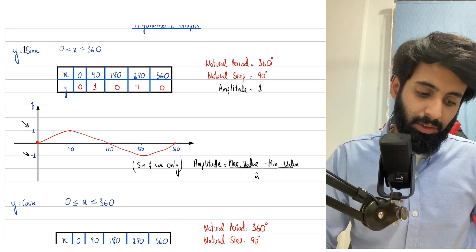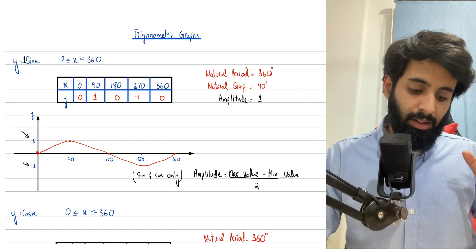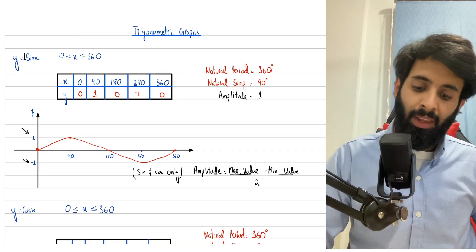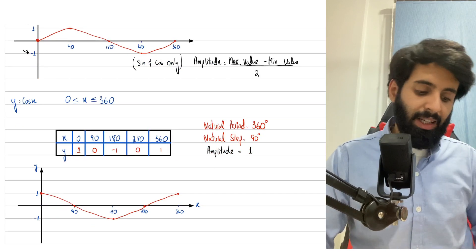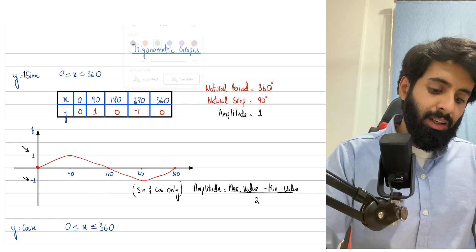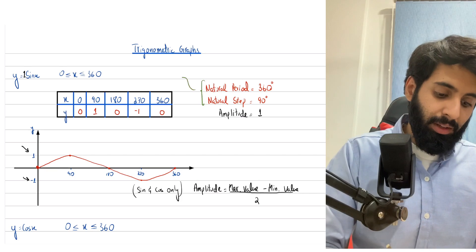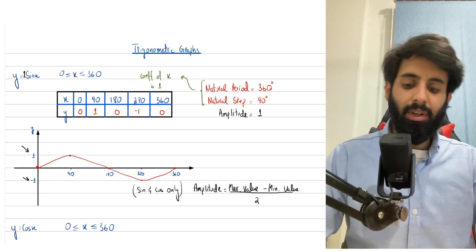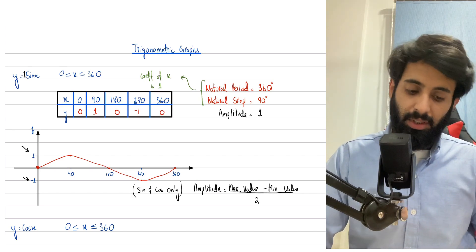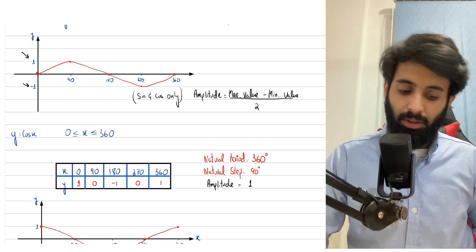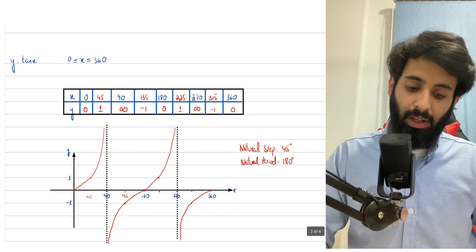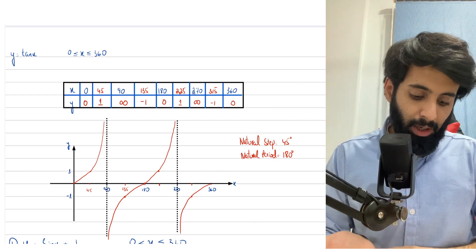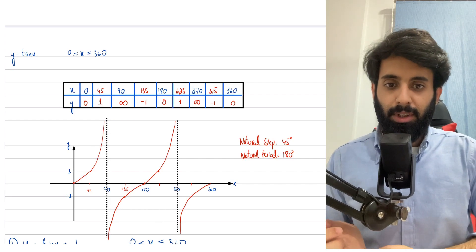The key takeaways from this part of the video: for sine, the natural period is 360 degrees and you plug in values after every interval of 90 degrees. The same goes for cos x. The natural period and natural step apply when the coefficient of x is one. With tan, the natural step is 45 degrees and the natural period is 180 degrees. When exactly do we need to alter this? That's something we're going to find out in the coming videos. But for now, this is enough — that's all for this video. I'll see you guys in the next part. Take care, bye-bye.